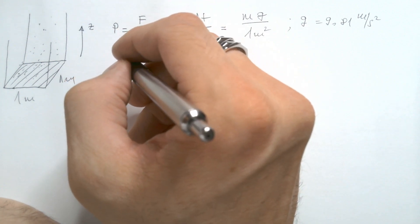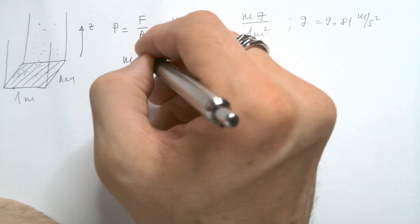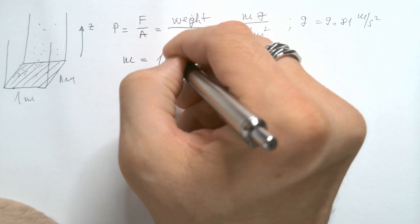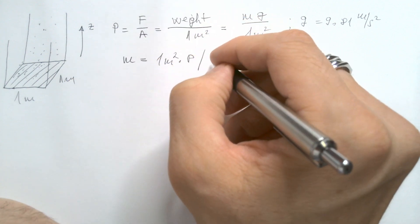And therefore, from here, we can simply find that mass is equal to one square meter times pressure divided by G.